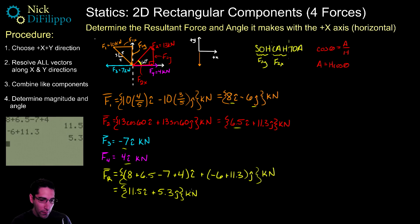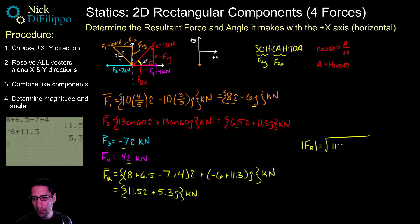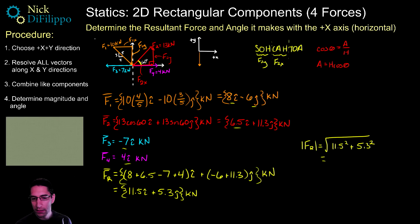If you're also asked for the magnitude and the angle, the magnitude of FR is the square root of 11.5² + 5.3², which equals 12.7 kilonewtons.